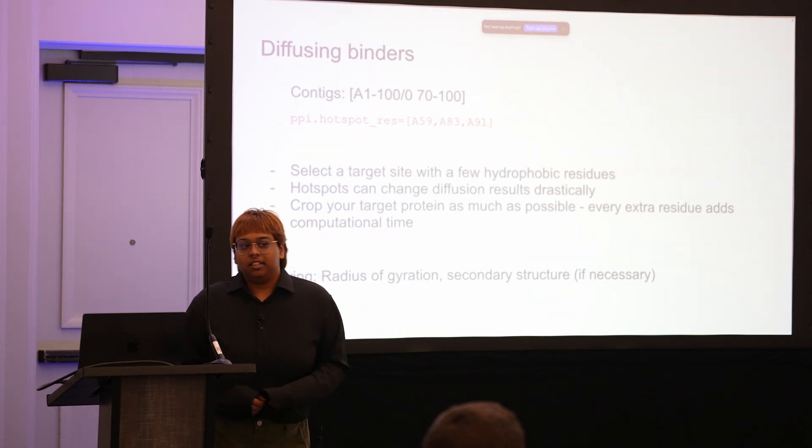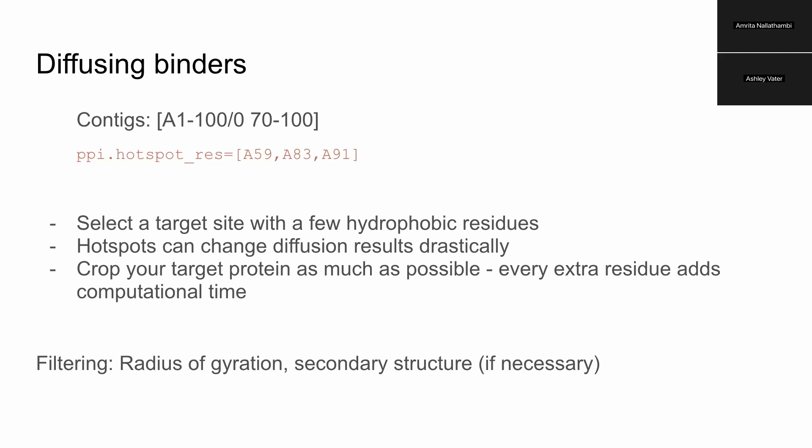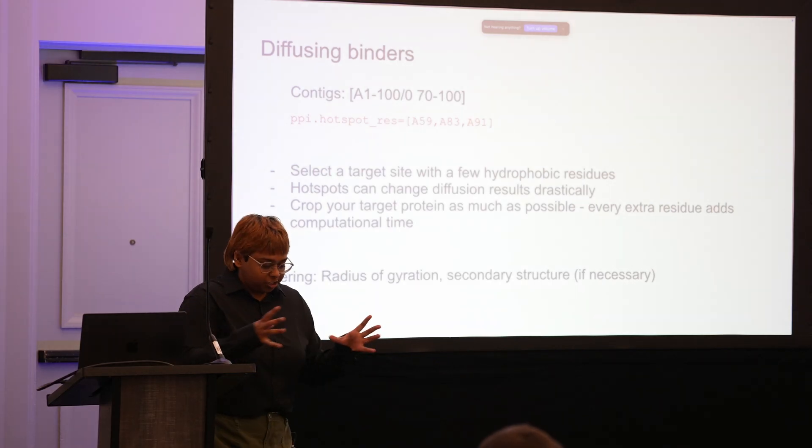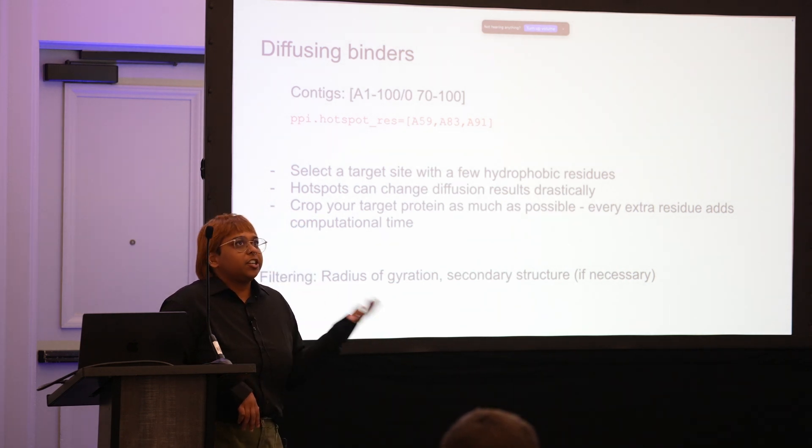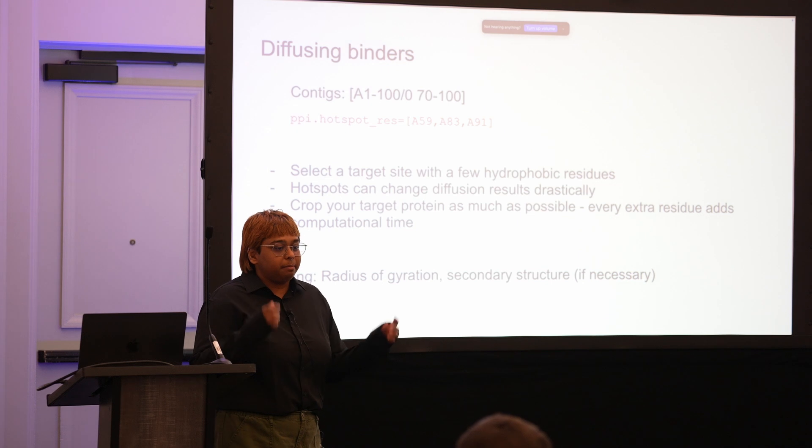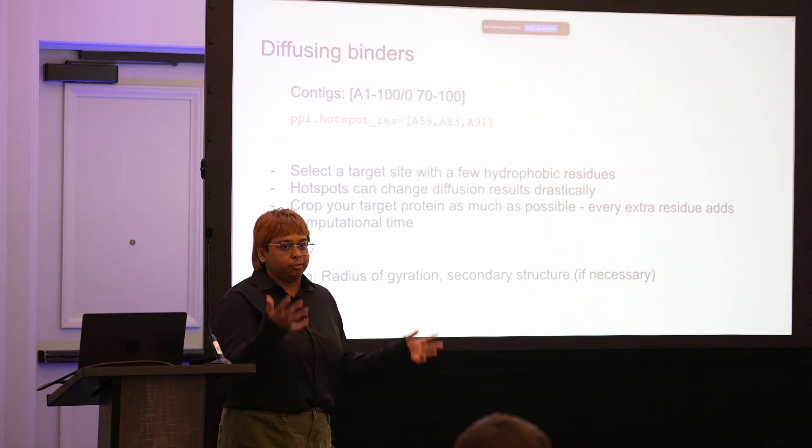You definitely want to crop your target protein as much as possible for the diffusion part of this pipeline, because when diffusion holds your residues fixed in place it scales with O of n squared, so exponentially with every residue you include increases the computational time. Crop it to just your interface for this part. For protein MPNN you don't need to use the full target, but for the AlphaFold refolding step you can bring back in the full target at that point.